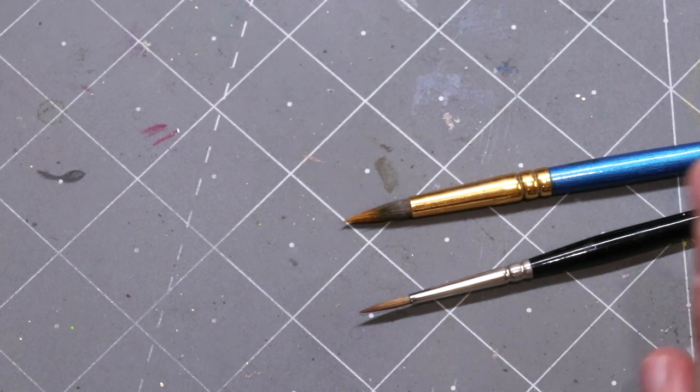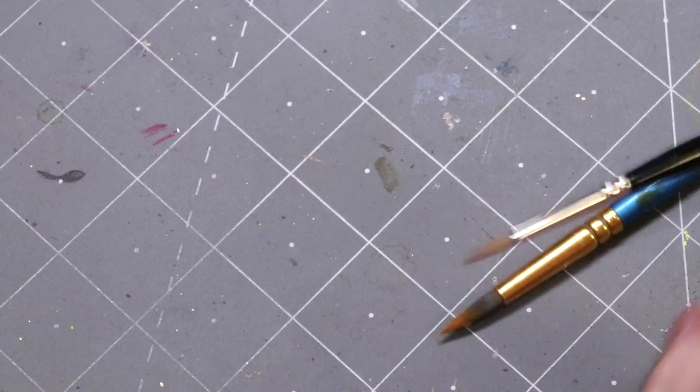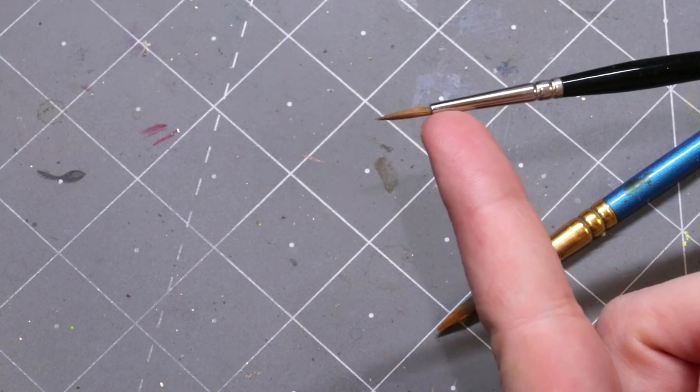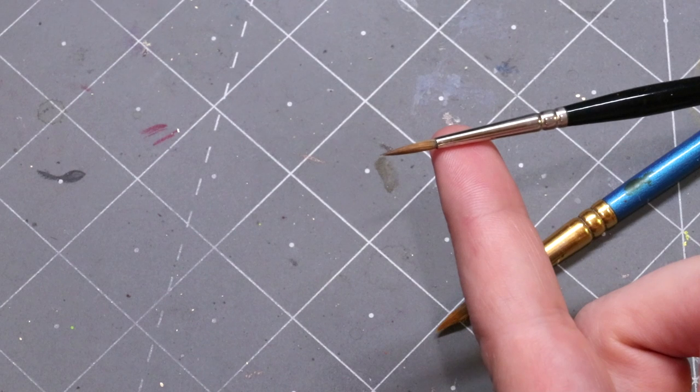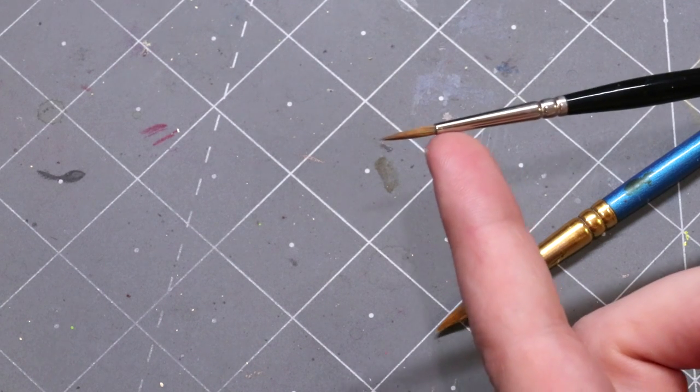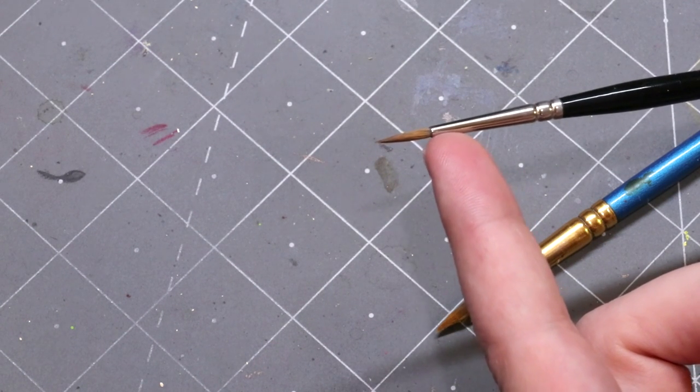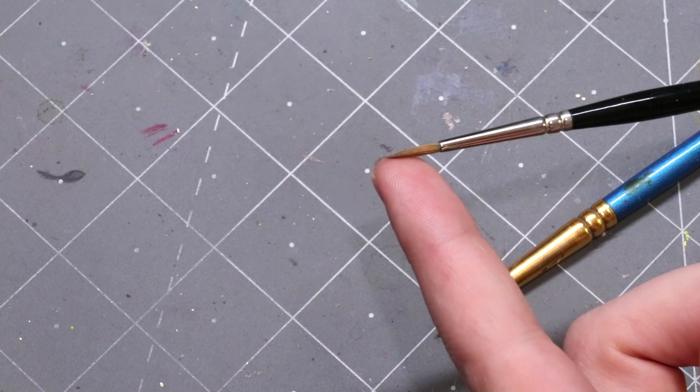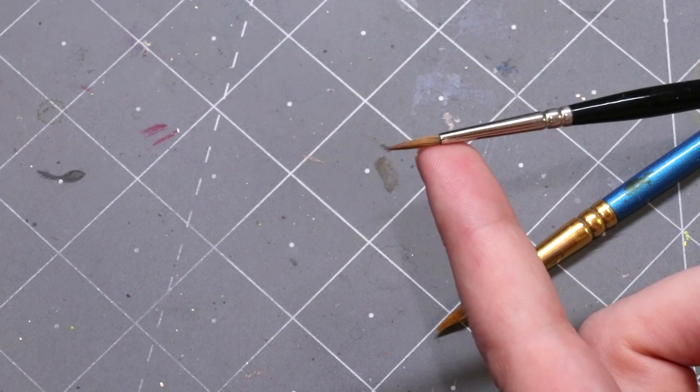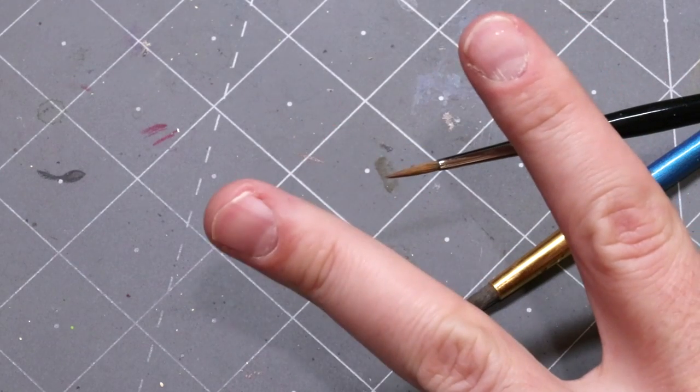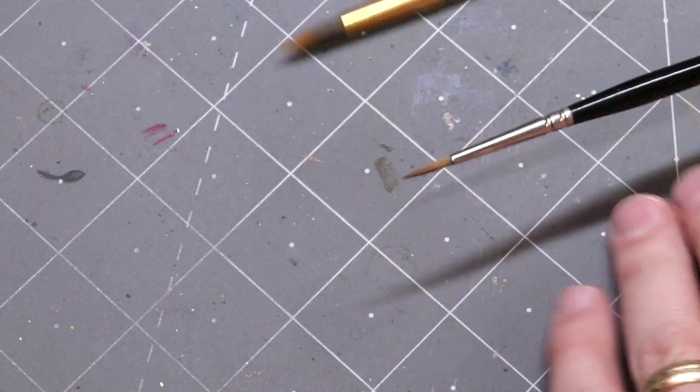First, avoid getting paint into the ferrule of your brush. So your brush has a tip, it has a belly, and it has a ferrule. When paint gets down in this area and dries, your brush tip is splitting because there is a chunk of paint down here where all the hairs are being forced together and it's forcing them to split apart.